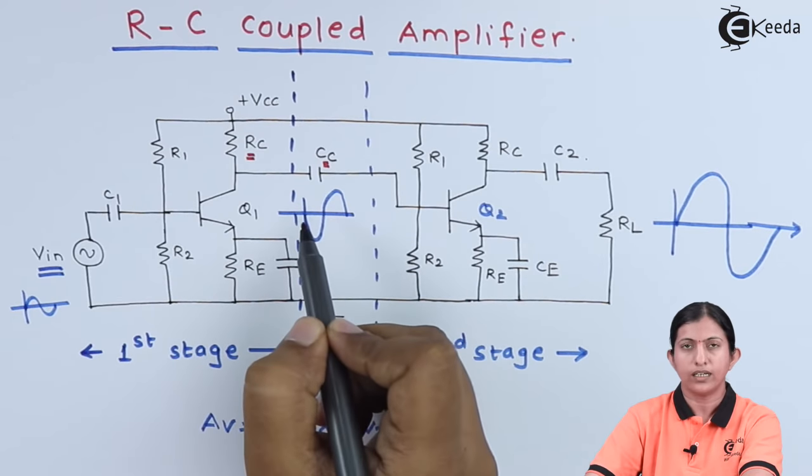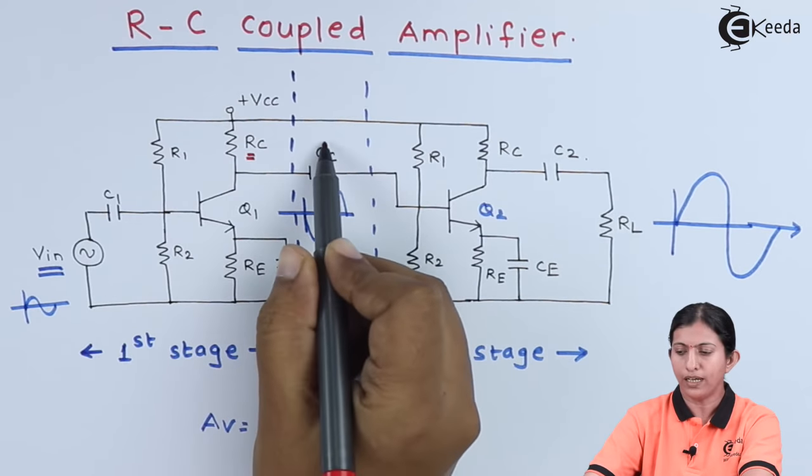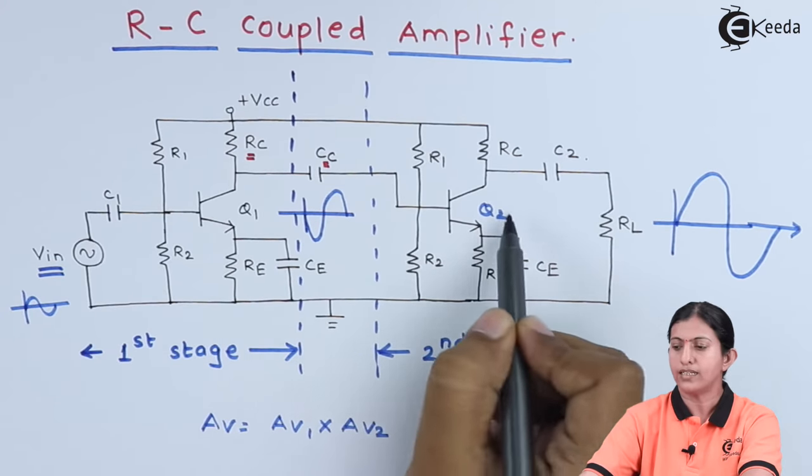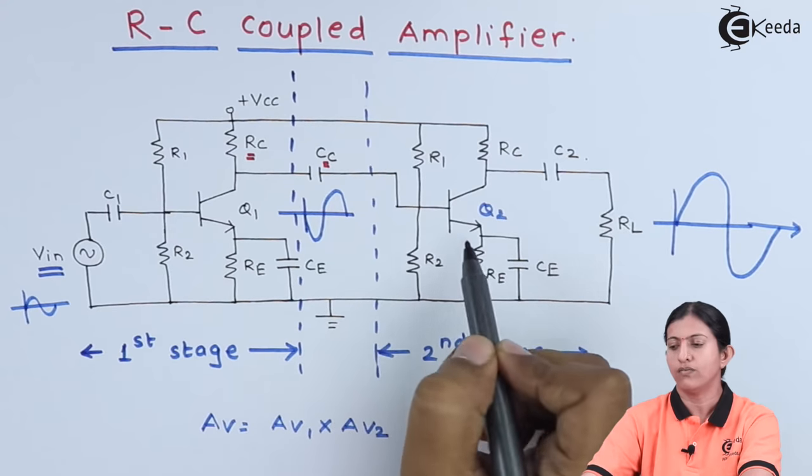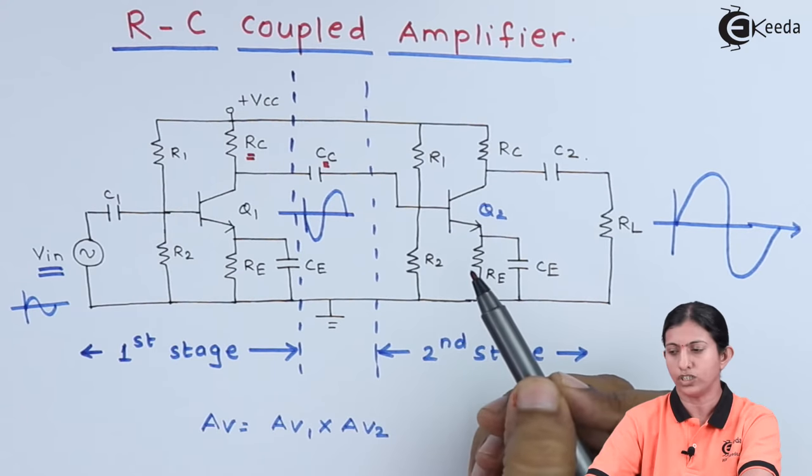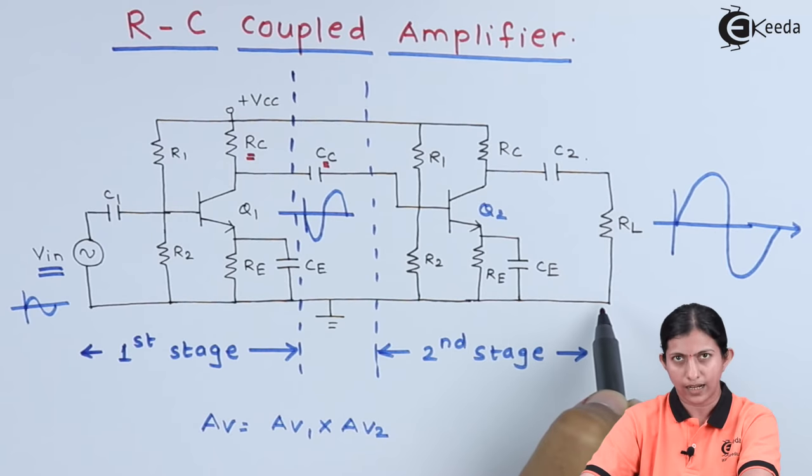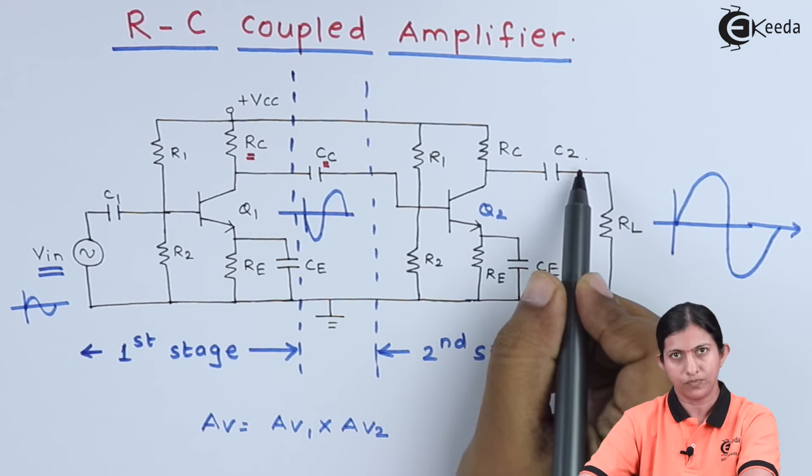This signal is applied through coupling capacitor CC to the second stage of the transistor. The second stage performs further amplification, which is available across the load resistor RL through capacitor C2.